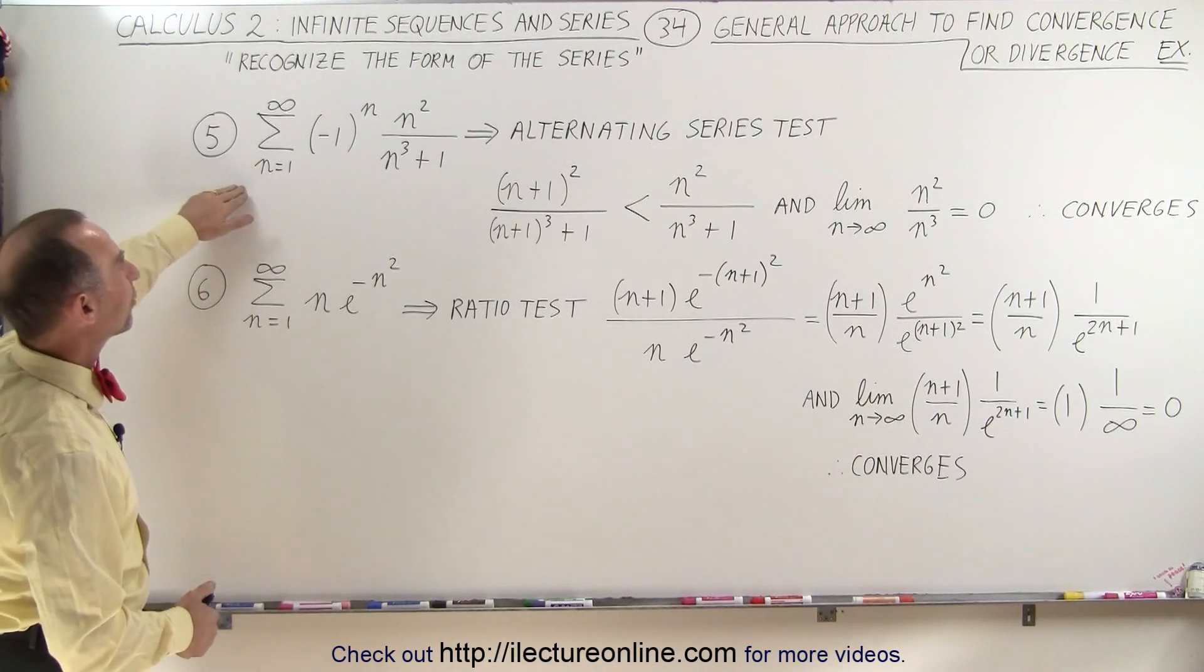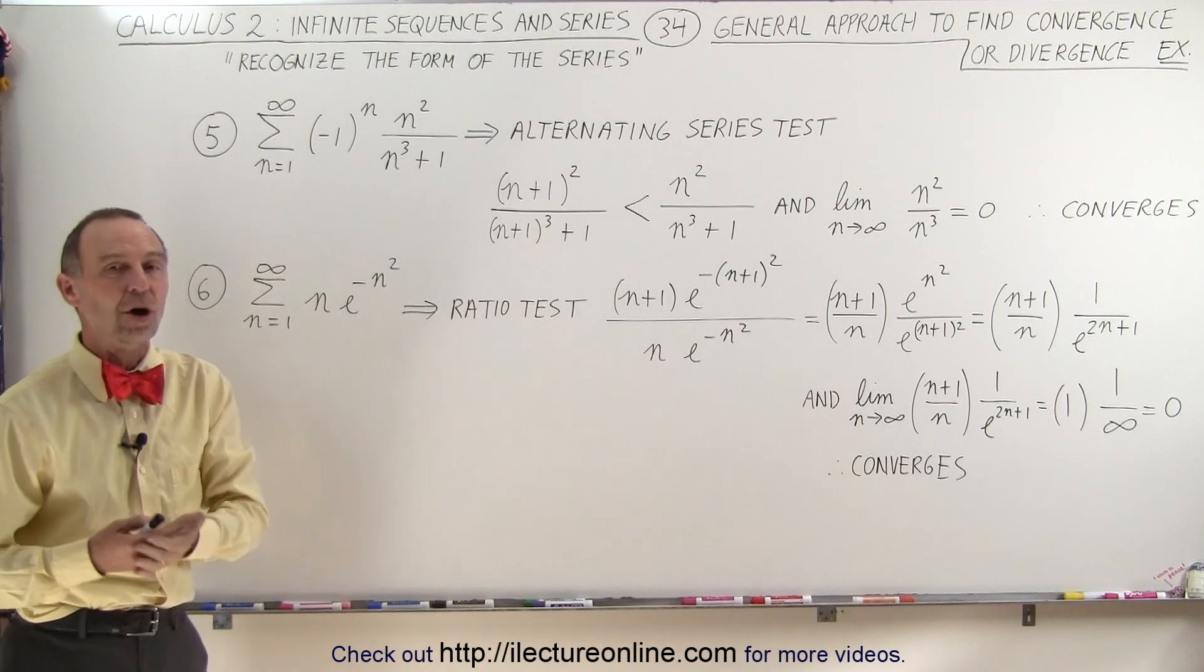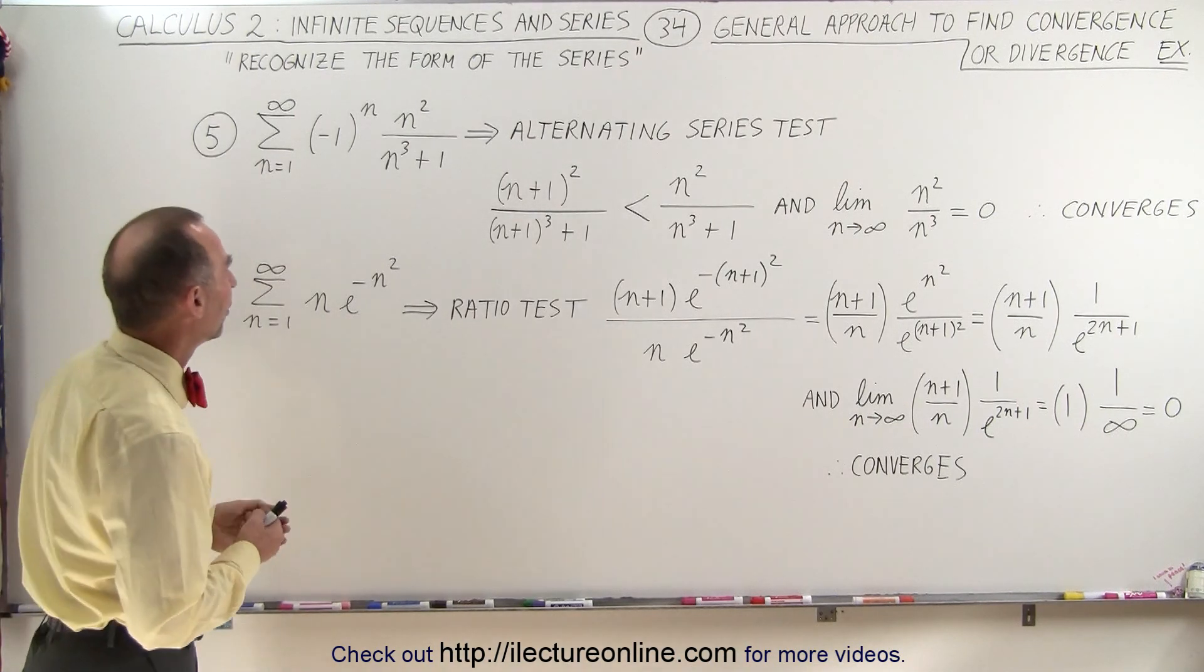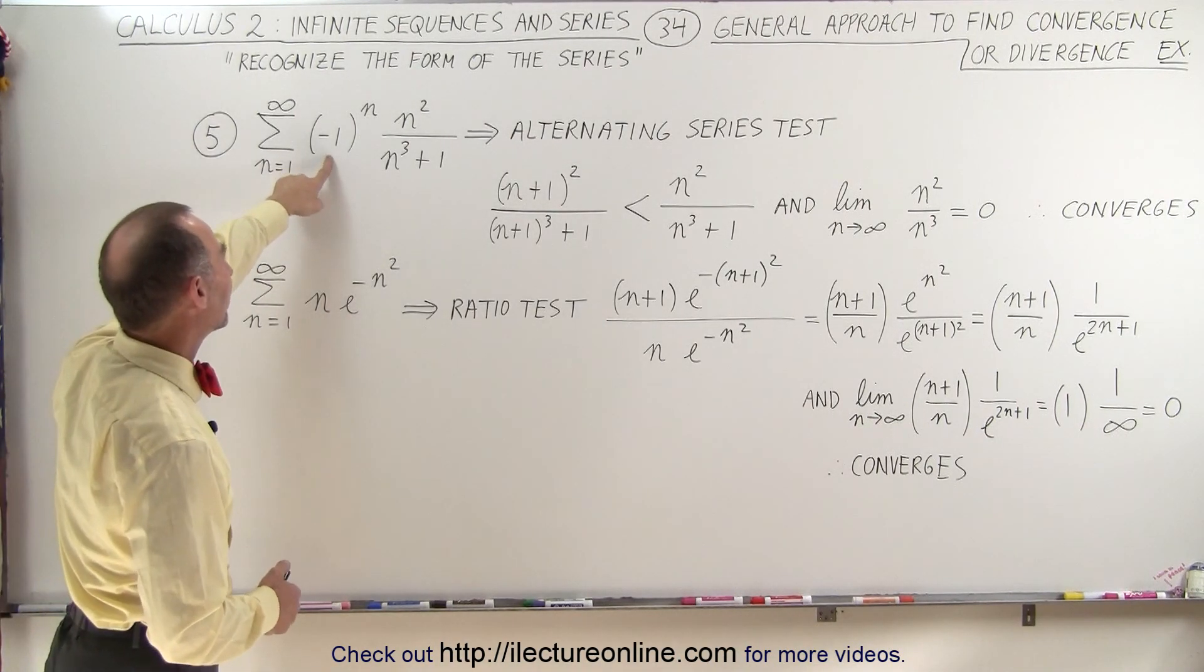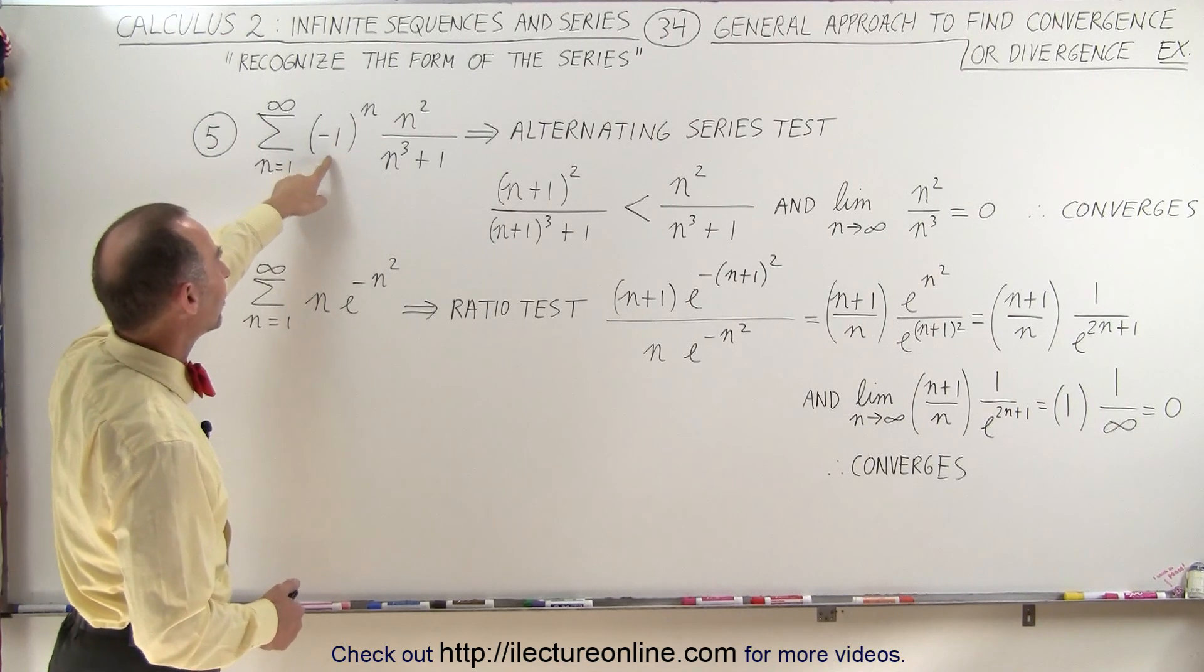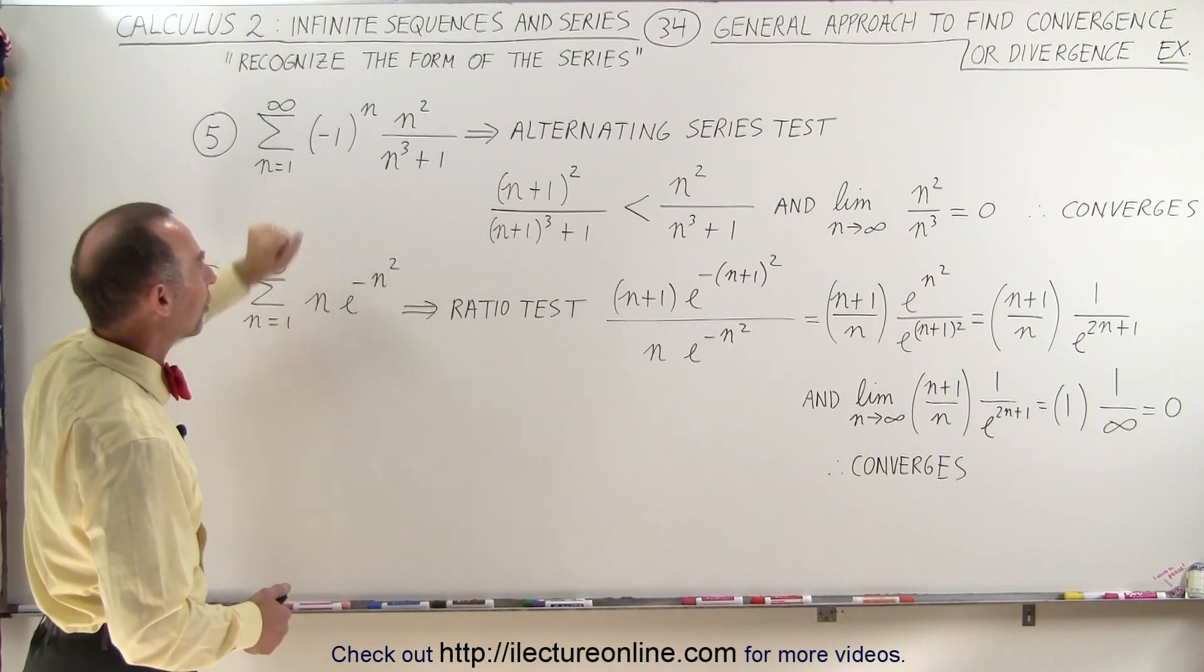The fifth example is where we have an alternating series, so we want to use the alternating series test. Here you can clearly see that as n increases by one, you're going to have plus and minus, plus and minus, in all the terms.